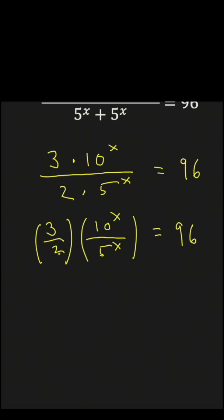Let's eliminate the 3 halves on the left by multiplying both sides of the equation by 2 thirds. 2 thirds times 3 halves is 1.